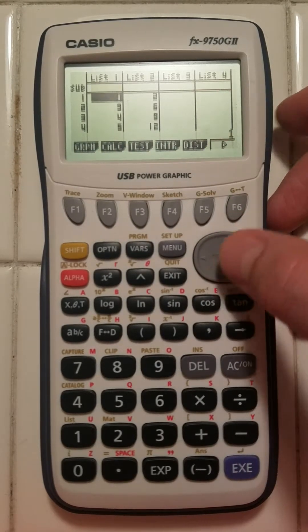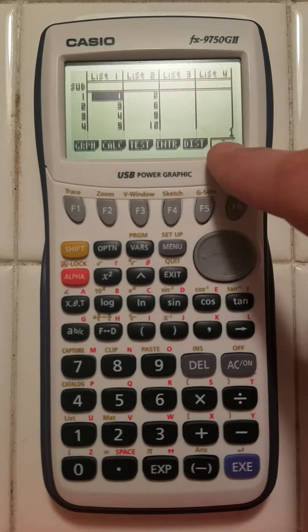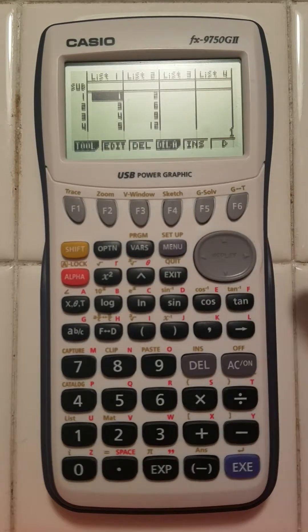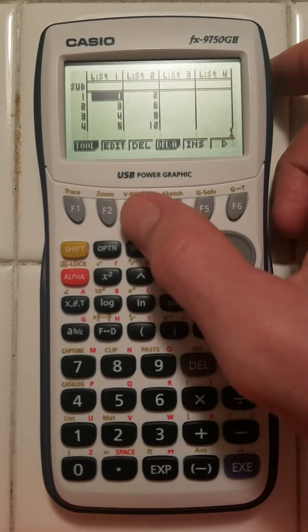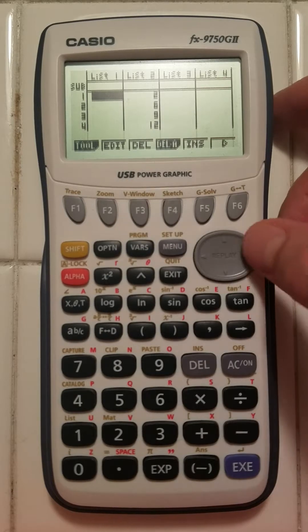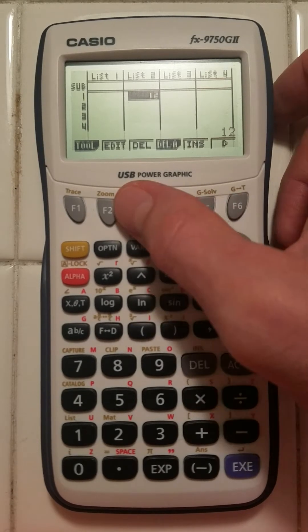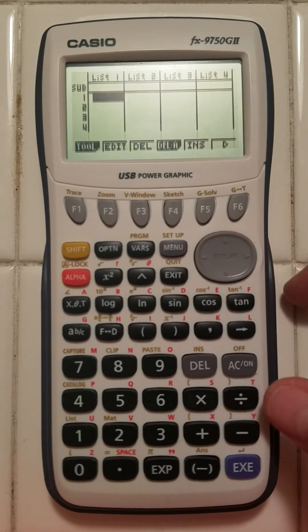Now in order to delete things, I'm going to hit F6, which moves me to additional parts of the menu, and then I can see DEL for delete, so I'll hit F3 to clear my data. And now I'm ready to enter new data.